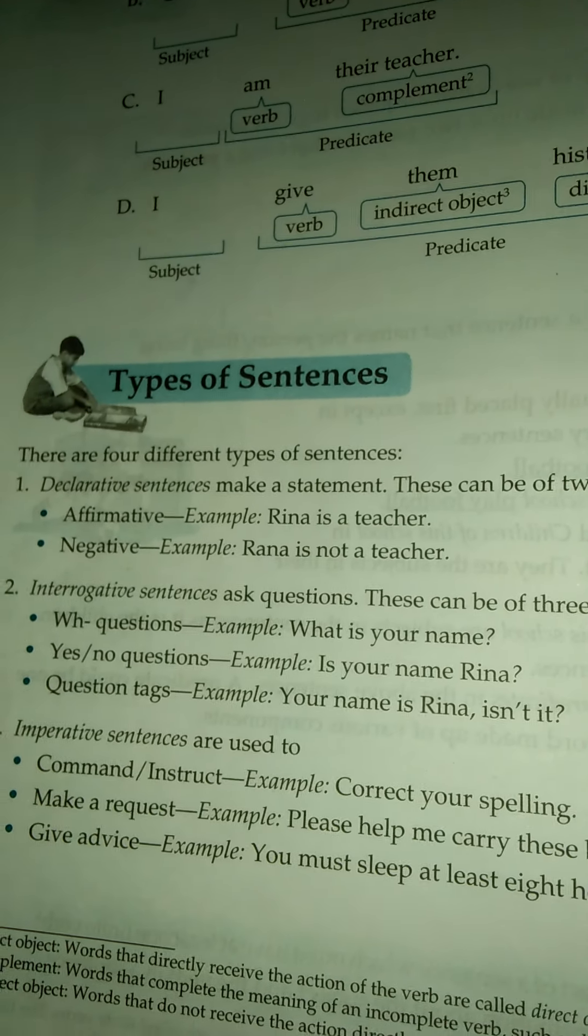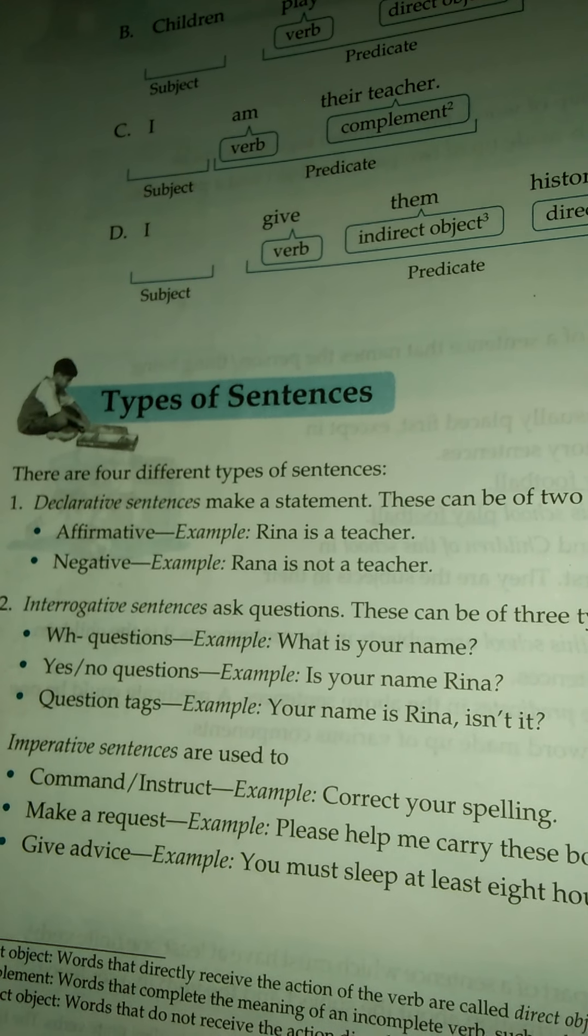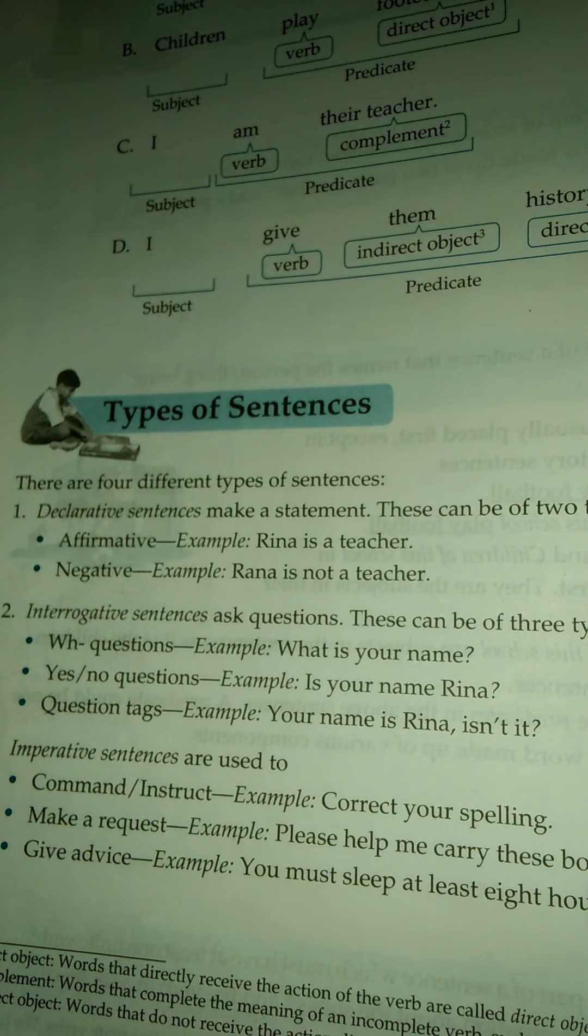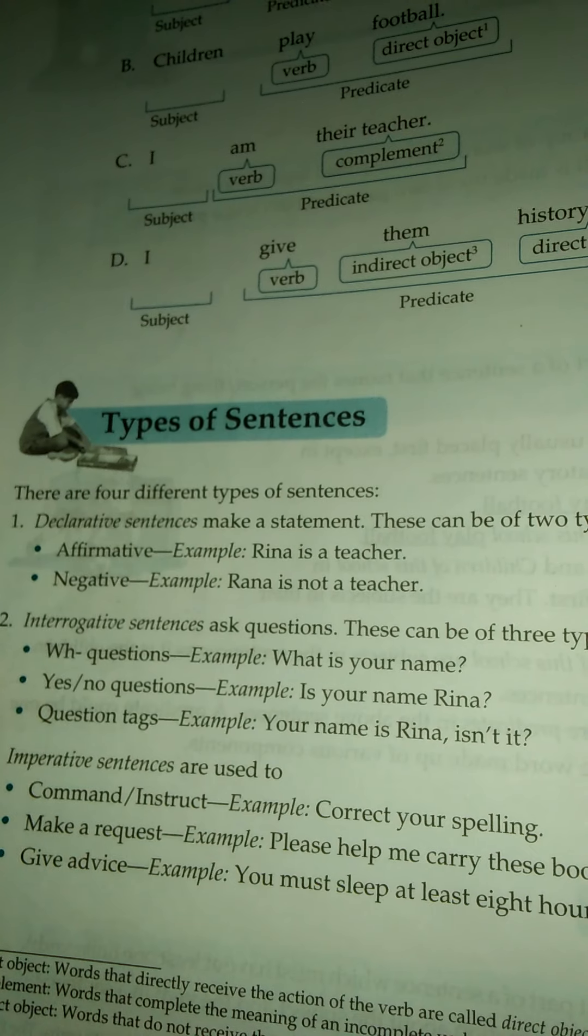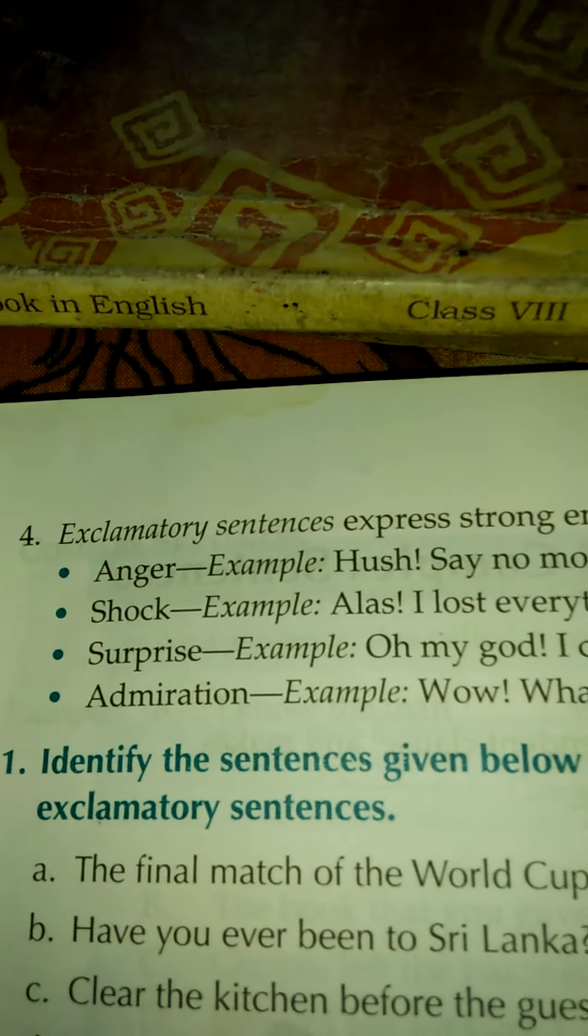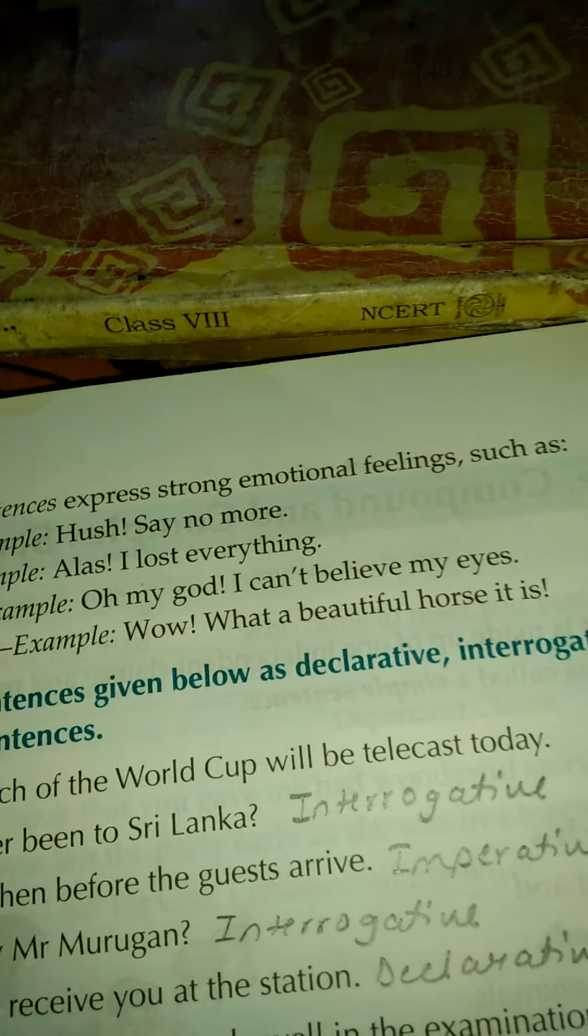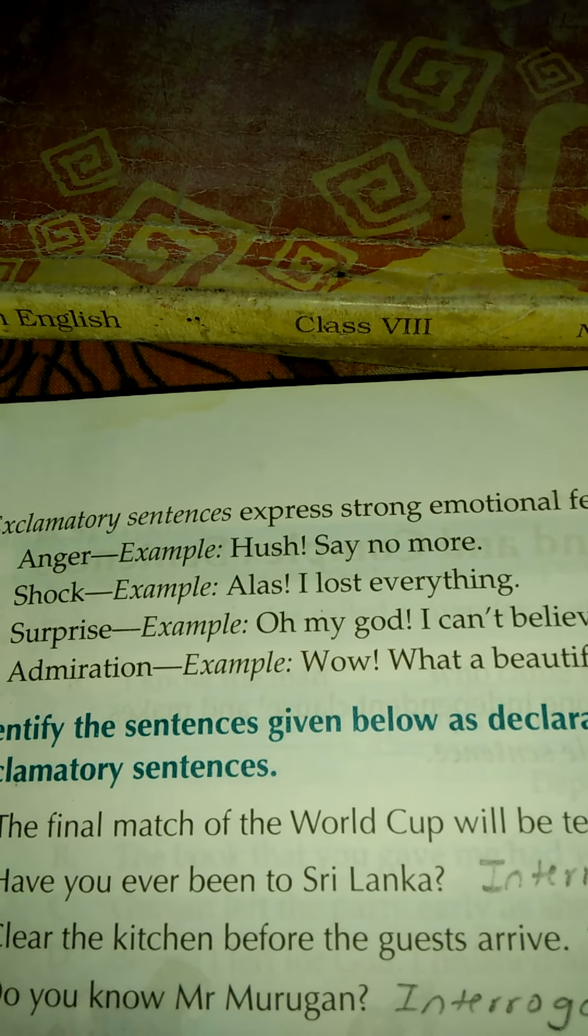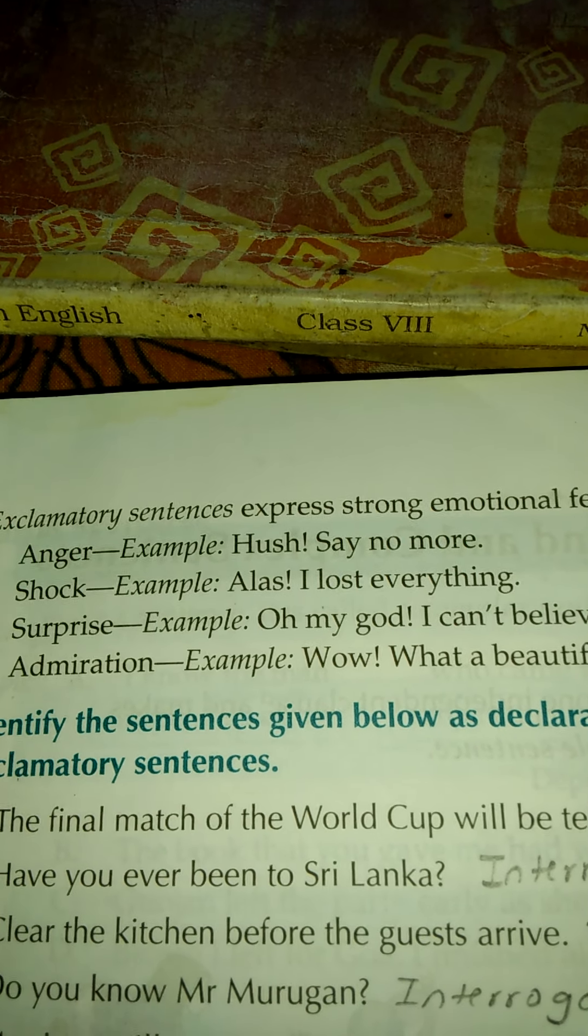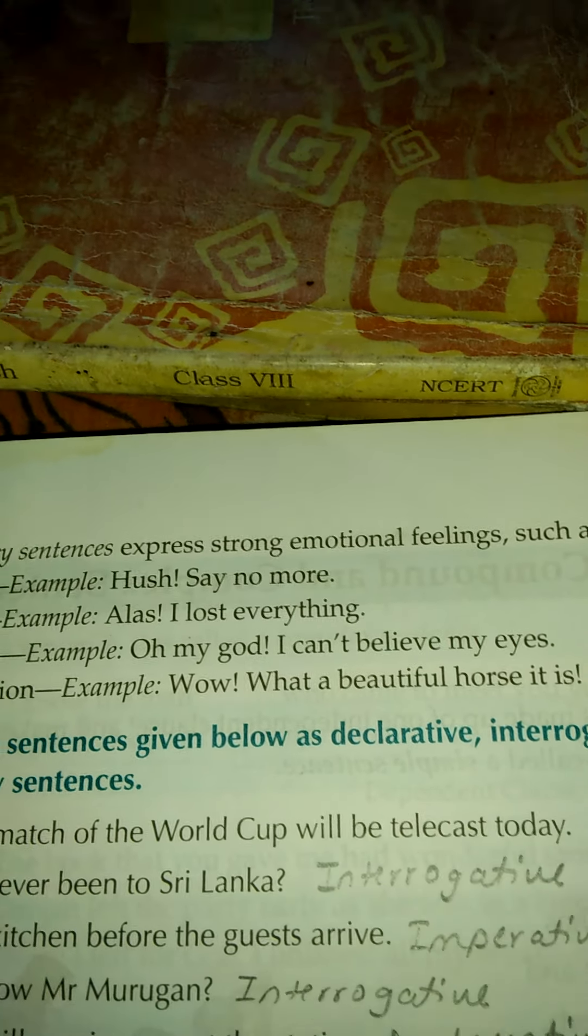And the third is imperative sentence, which are used for command, request, advice. Give me a glass of water. And the last one is exclamatory sentence that expresses a strong emotional feeling, such as anger, shock, surprise, admiration. What a beautiful flower the rose is. Alas, I lost everything. Oh my God. I cannot believe my eyes.